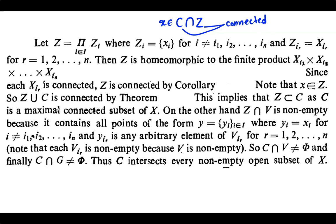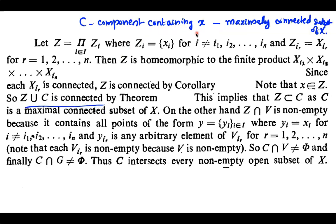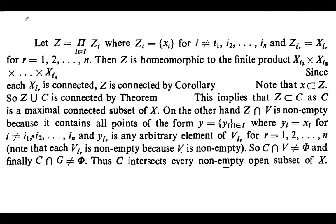Therefore their union Z ∪ C is connected. But C is the component containing x, meaning C is the maximally connected subset of X containing x. Since Z ∪ C is a superset of C, is connected, and contains x, C cannot be properly contained in Z ∪ C. Therefore C = Z ∪ C, which implies Z ⊆ C.